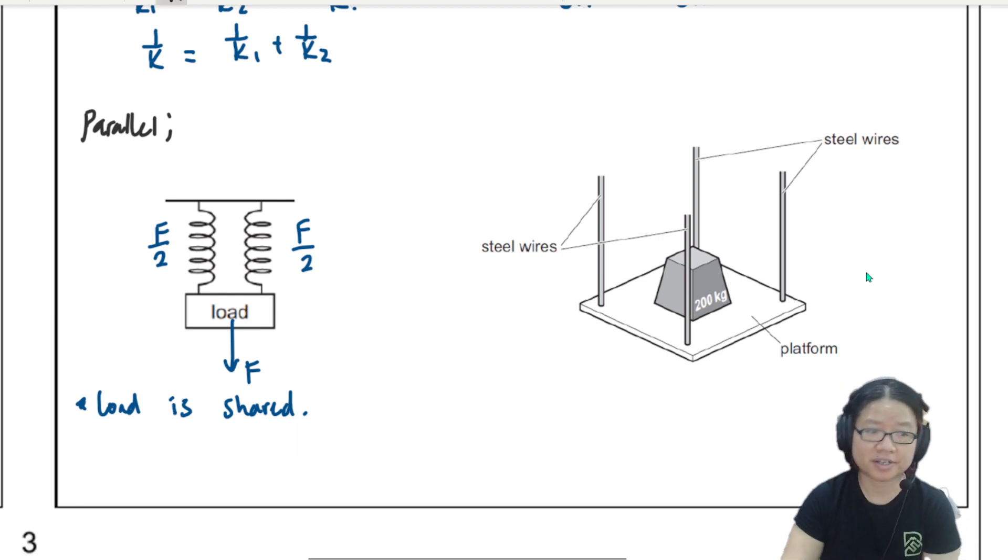When we compare to this one, both springs will support F. Whereas this one, each spring will take F over two. So if you look at the steel wire, it's the same idea. Here, this 200 kg weight, but it just means that you support 50 kg. You support 50 kg. Everybody support 50 kg each.